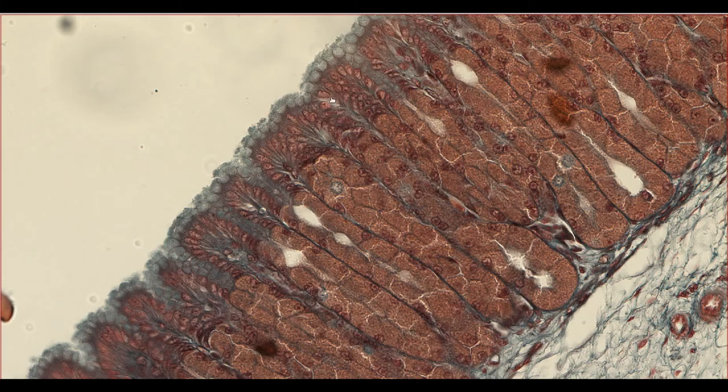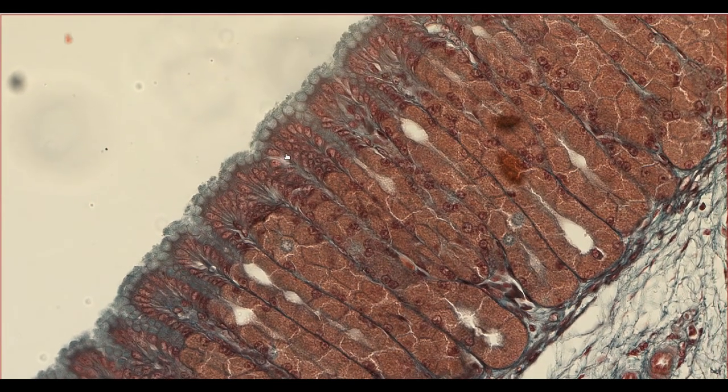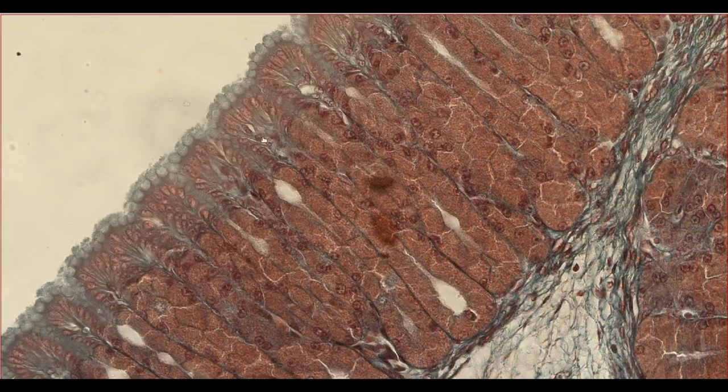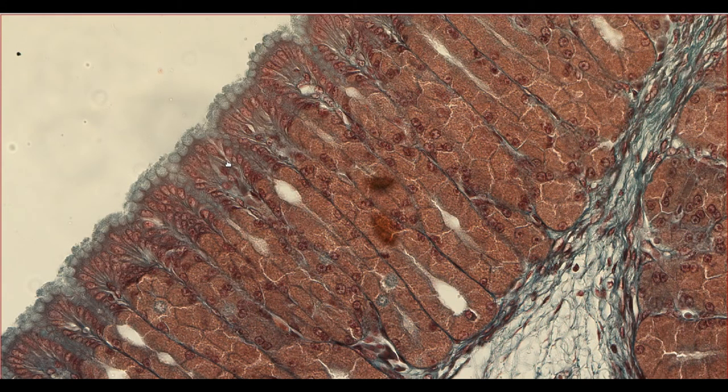Their function is to protect the underlying tissue from the acid and the digestive enzymes which are digesting the food above them. You can see there are periodic breaks in the epithelium called gastric pits or foveola, such as here, for example, here and here.